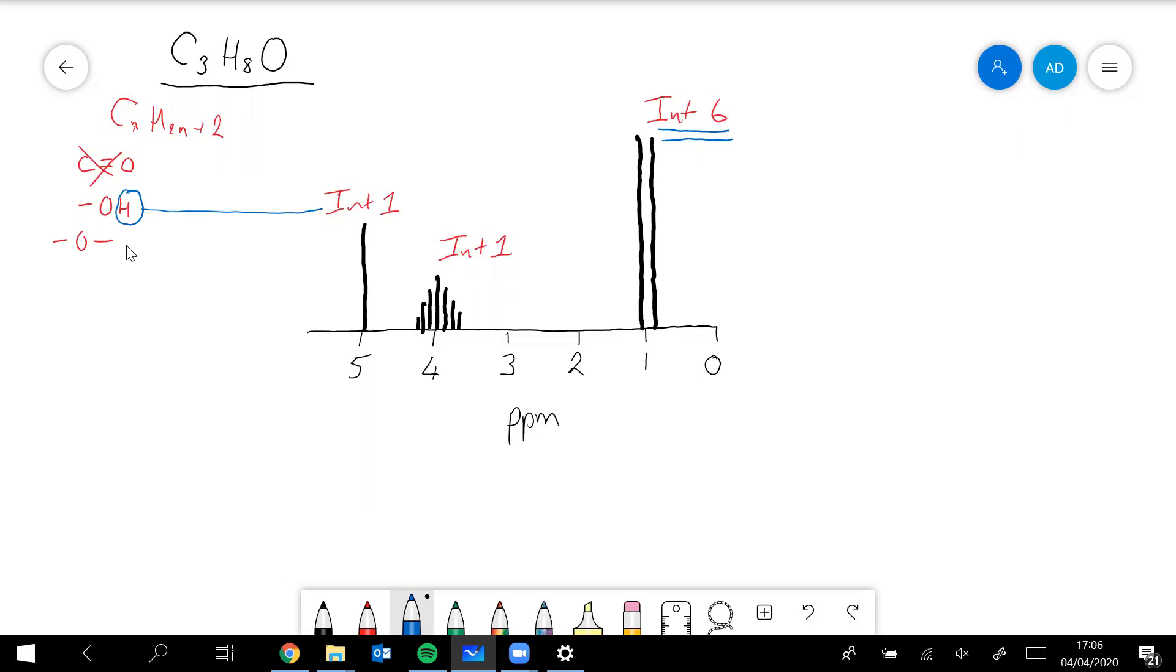Usually when they're in the same environment they're stuck to the same carbon atom. Obviously you can't have six hydrogens stuck to the same carbon, so this is almost certainly two lots of three. It's two methyl groups which are in identical positions to each other.